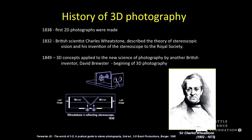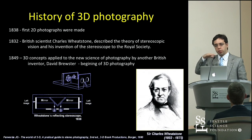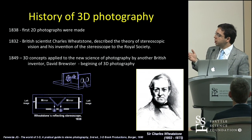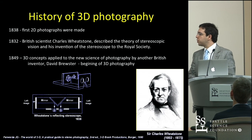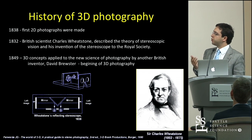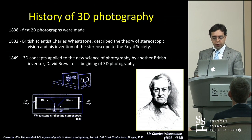2D and 3D photography began almost in the same years, in the first half of the 19th century. This is because the initial idea was to try to replicate the depth, the same sensation that we have naturally in pictures. Charles Wheatstone was a famous figure at that time, developing the first concept and the major concept of 3D photography.